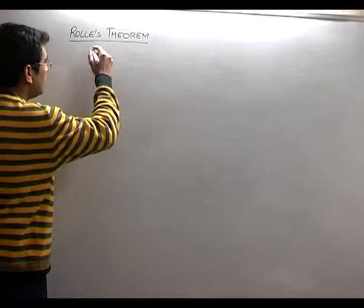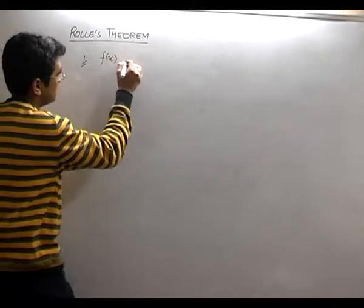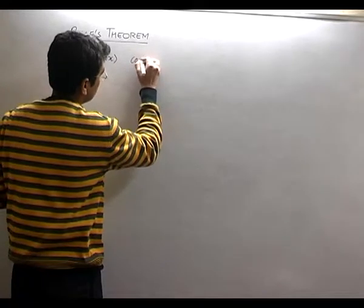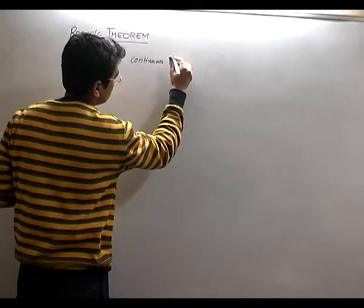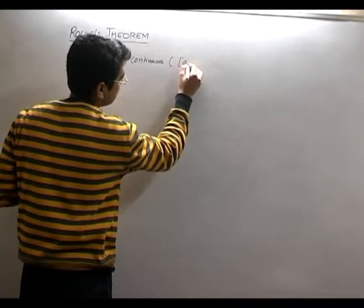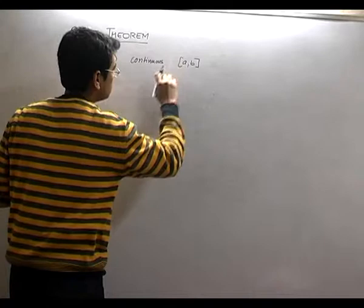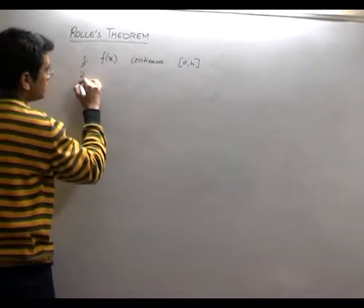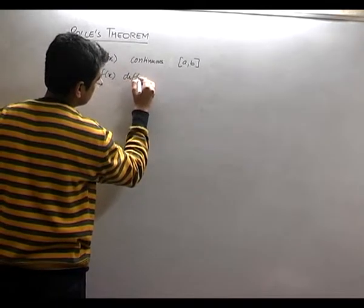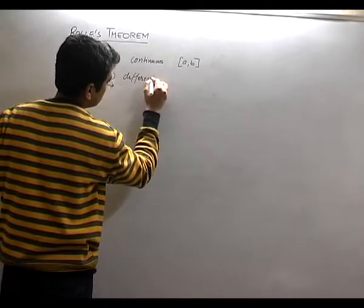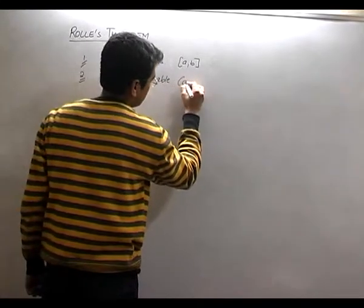The conditions are as follows. If there is a function f(x) which is continuous on [a, b], including both a and b — that is the first condition. The second condition is that f(x) is also differentiable in (a, b).